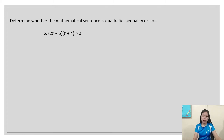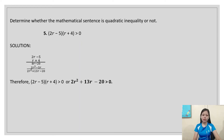Another: determine whether the mathematical sentence is a quadratic inequality. We have (2r - 5)(r + 4) > 0. Since the equation is not in its final form because there is a parenthesis, we have to remove the parentheses and multiply the two binomials: (2r - 5)(r + 4).